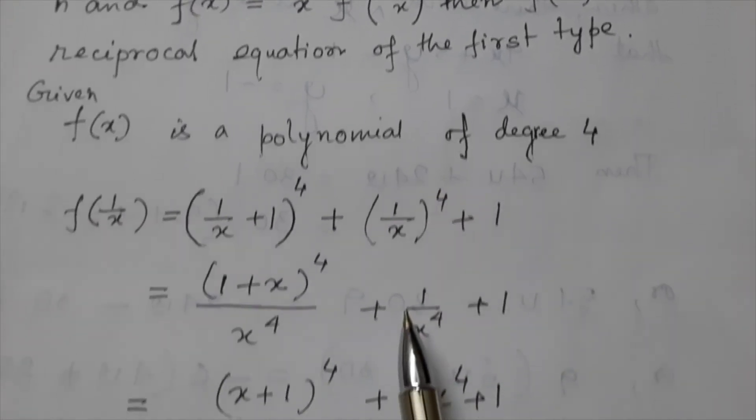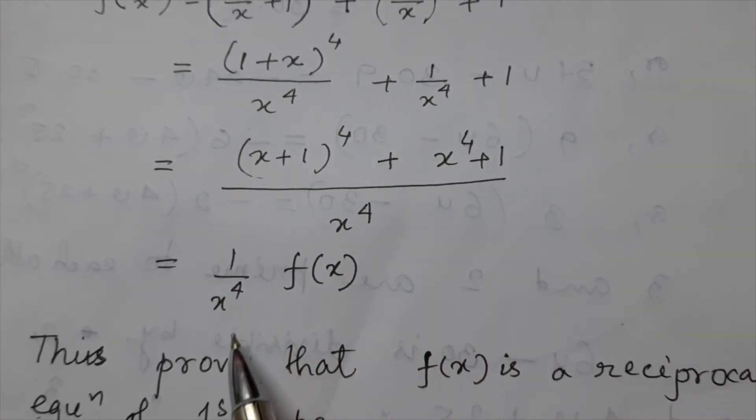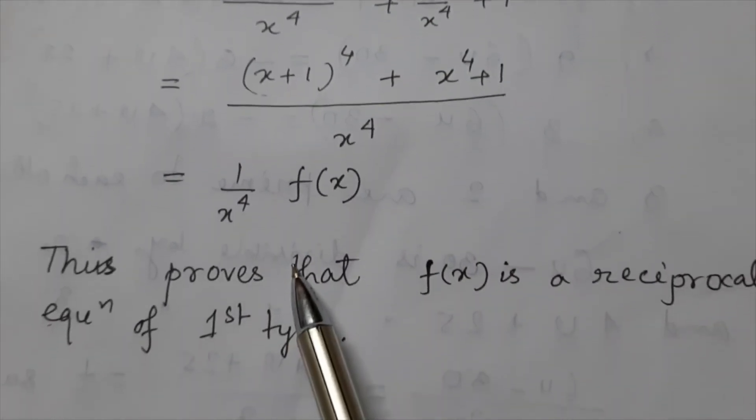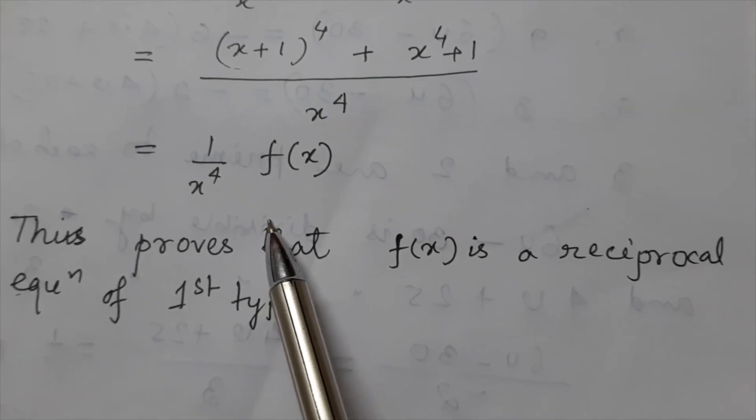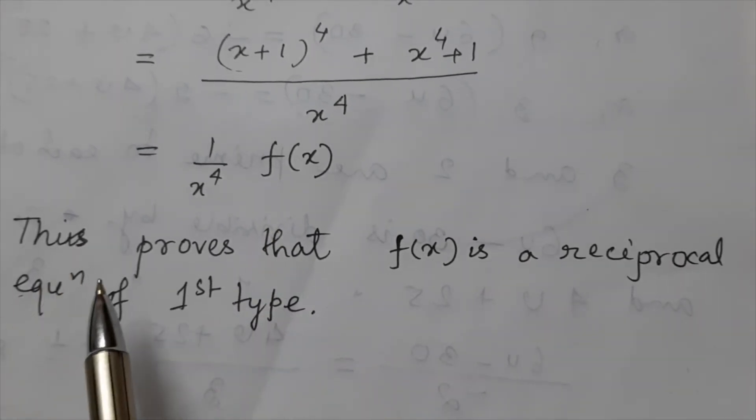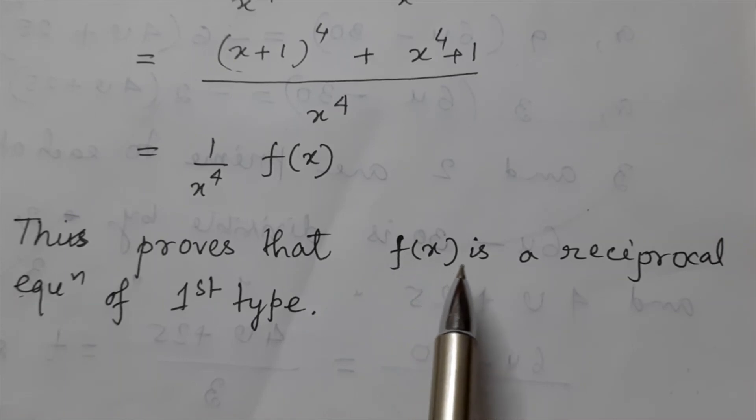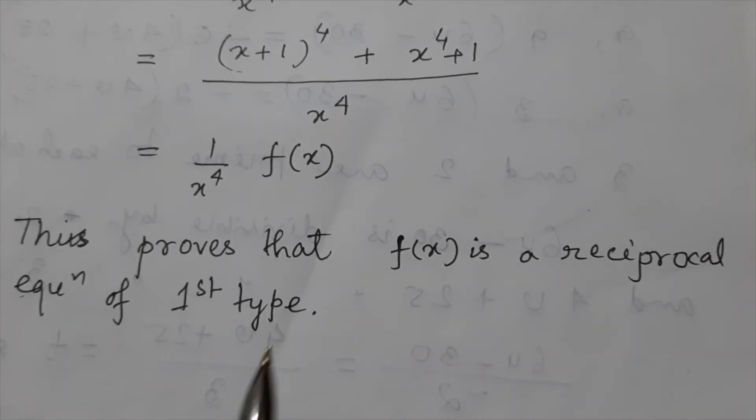After calculations we are getting 1 by x to the power 4 times f(x). This proves that f(x) is a reciprocal equation of first type.